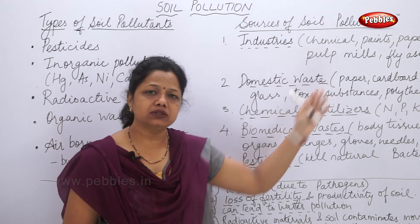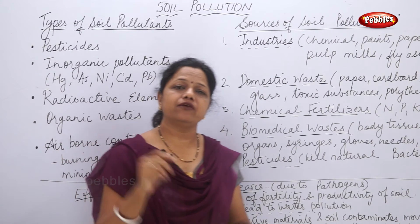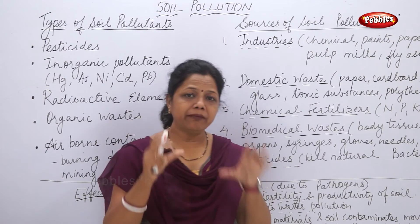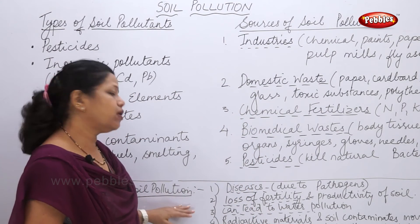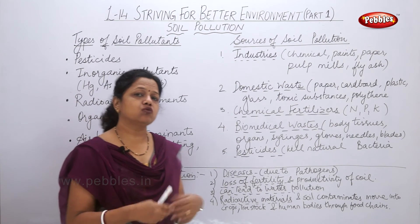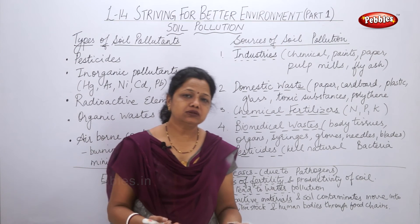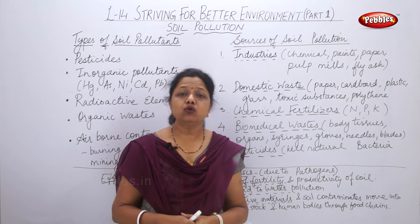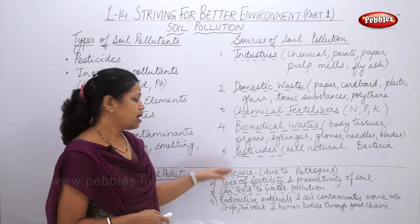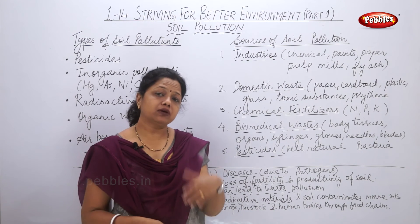So those were the sources of soil pollution along with the types of soil pollutants. Now it is important to understand the effects of soil pollution on human beings, living organisms, and biotic and abiotic factors in the environment. The first effect is diseases. We are exposed to so many pathogens because of soil pollution — pathogens are microorganisms that spread diseases. They enter the system through soil, water, and air, causing diseases in humans, plants, and animals.